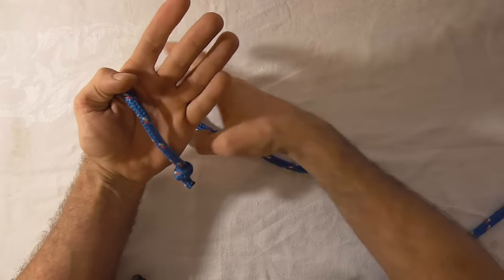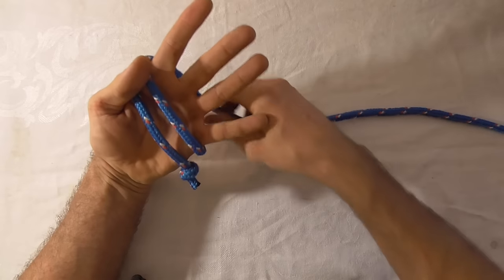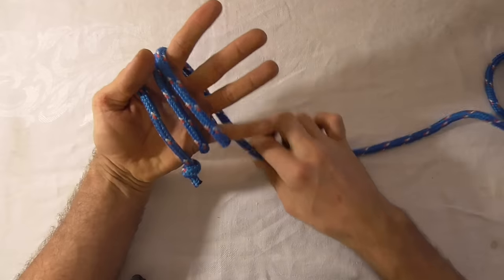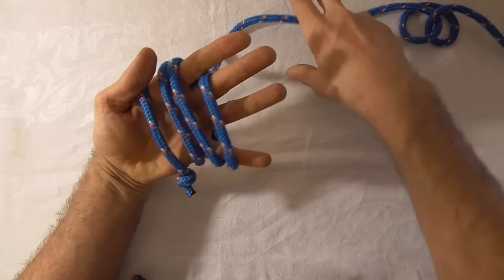And then we just want to lay that across our palm with the knot facing down here. We're going to take three and a half wraps around our palm. Three and then a half.